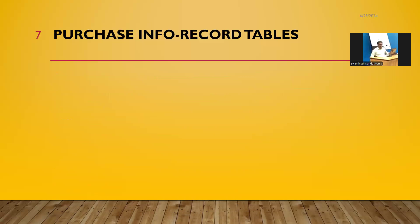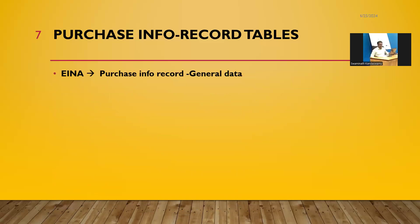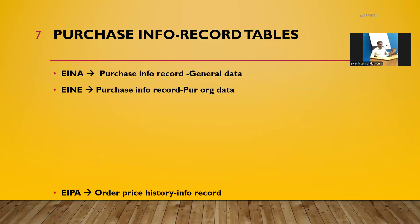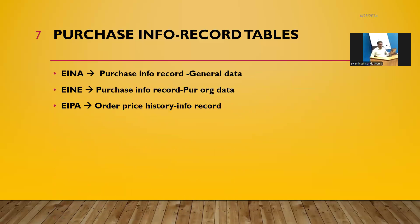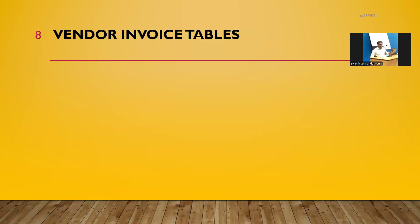Purchase Info Records tables. EINA: Purchasing Info Record General Data. EINE: Purchasing Info Record Purchase Organization Data. EIPA: Order Price History Info Record. A018: Material Info Record.